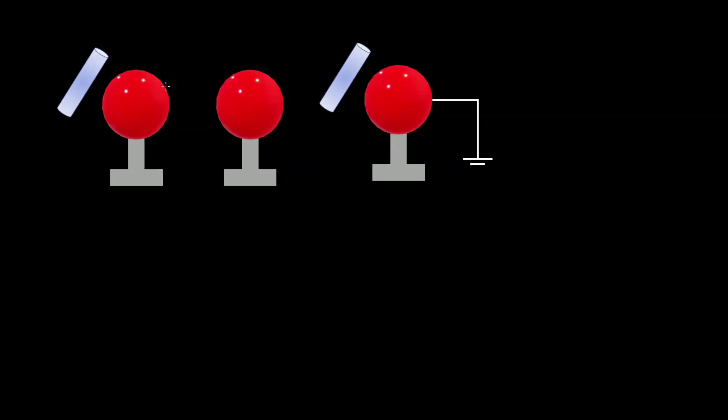Today we're going to look at how charge can be induced on a conductor by bringing it near an external electric field. So suppose we have this glass rod that's positively charged and we bring it near a metal conductor which is insulated at the base.